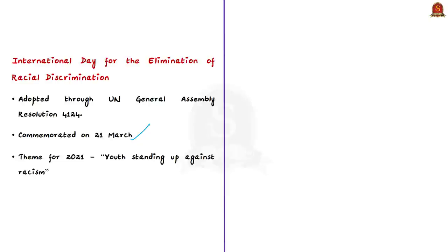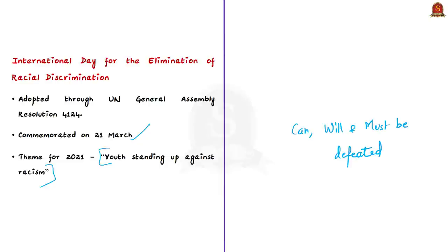The theme for this year's International Day is 'Youth Standing Up Against Racism.' UNESCO celebrates this day by organizing events at its headquarters and in cooperation with member cities of the International Coalition of Inclusive and Sustainable Cities. While tackling racism, we should remember the words of former UN Secretary General Kofi Annan: racism can, will, and must be defeated.